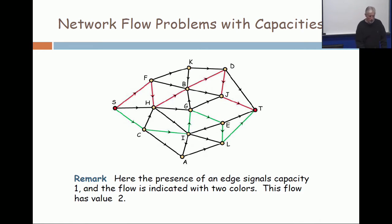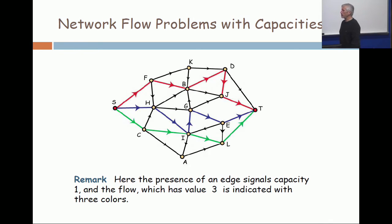But if you do that, you can. Here I have three units of flow: one red unit, one blue unit, and one green unit. They all go from source to sink, and now this is clearly maximum.